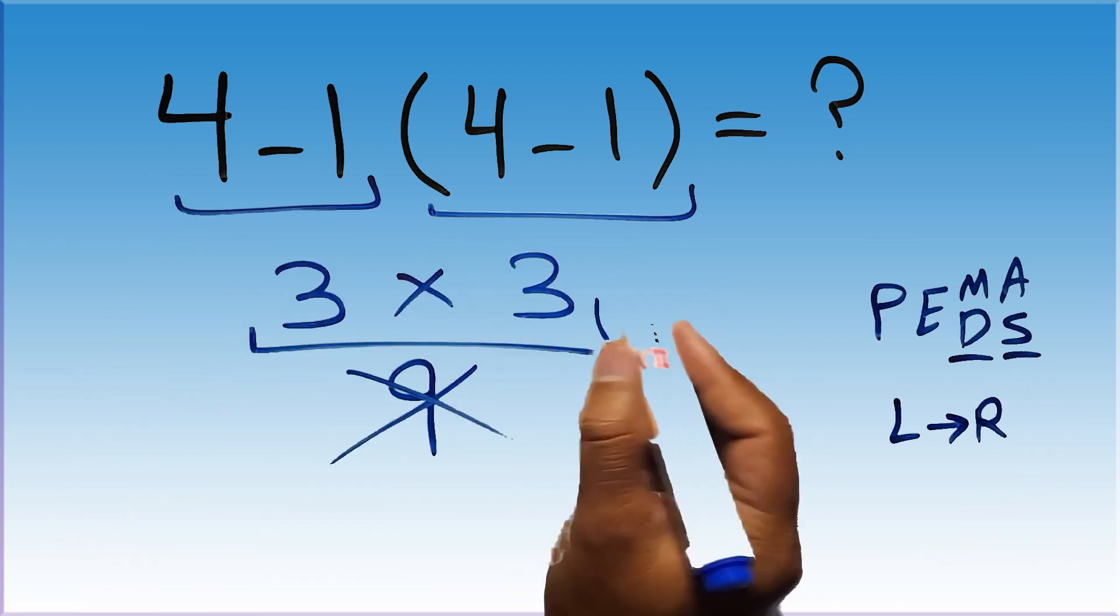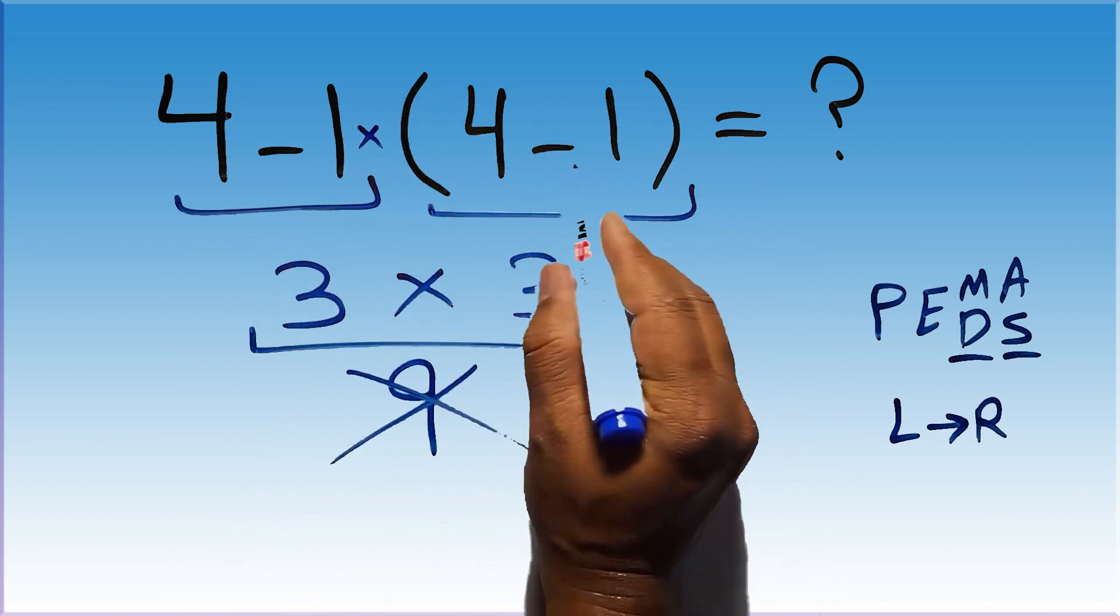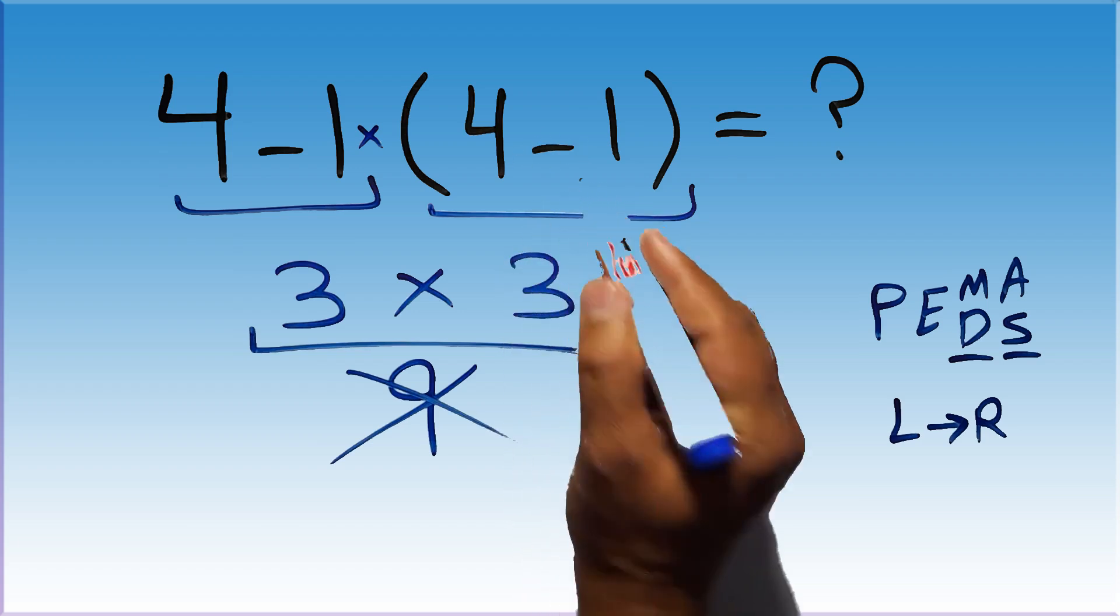In this expression, we have one subtraction, one multiplication, and one parentheses. Inside this parentheses, we have one subtraction.